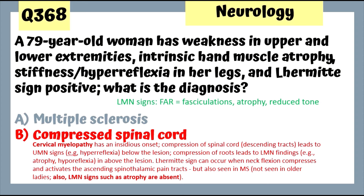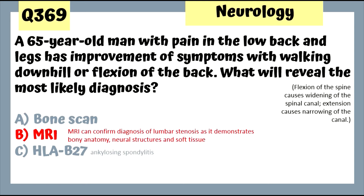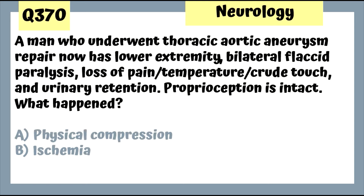Question 369: A 65-year-old man with low back and leg pain with improvement of symptoms with walking and flexion of the back — this is lumbar stenosis which improves with flexion. MRI will reveal the diagnosis. Question 370: A man who underwent thoracic aortic aneurysm repair now has bilateral lower extremity flaccid paresis and loss of pain and temperature.